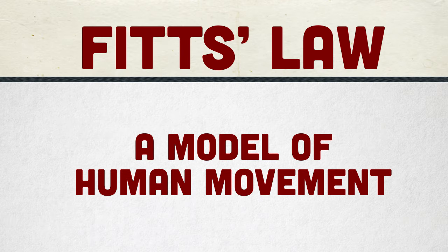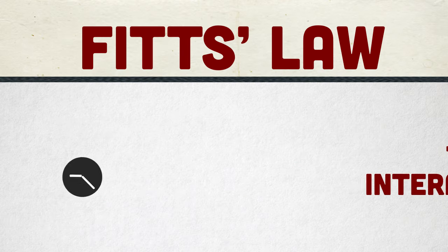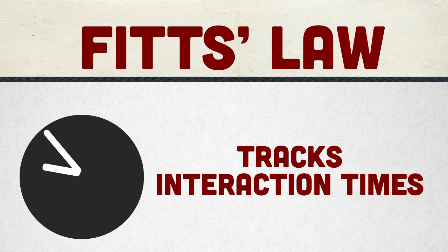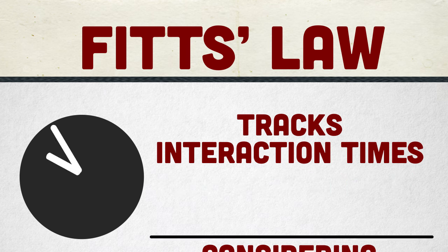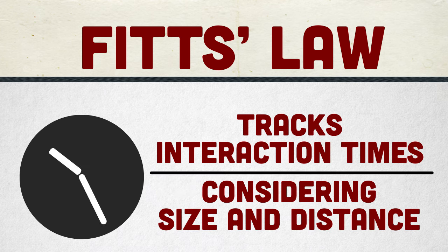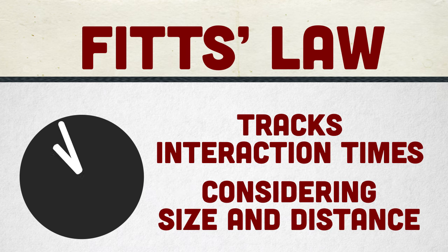D is the distance of movement from start to target center. W is the width of the target. Fitts' Law is a model of human movement. It tracks the time it takes to point at something, taking into consideration the size and distance of the target.